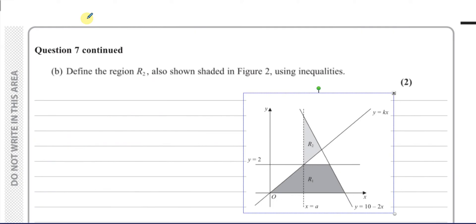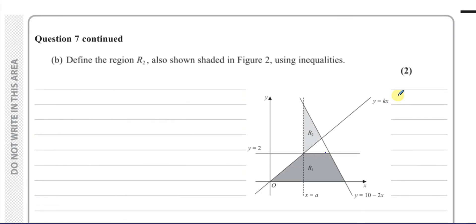Now for part B. It says define the region R. So now we know that this is y equals 8 over 9x, and we know that this is x equals 9 over 4. So we've got to define the region R2, also shaded in figure 2. So we can see that here we have a dotted line. So the dotted line means it's not included. So we say x is greater than 9 over 4. That's one inequality. Then we have these other two inequalities. There's three lines that define R2, so it's going to be three inequalities.